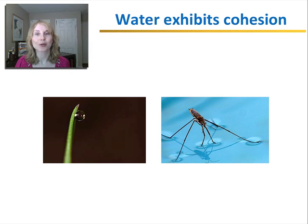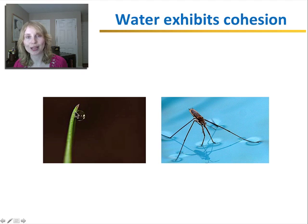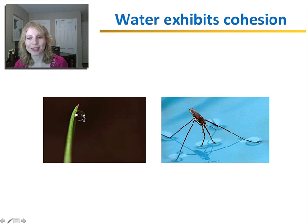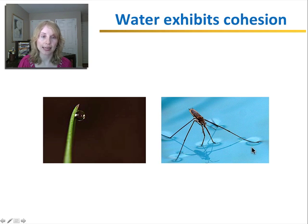Water also exhibits a property known as cohesion — the attraction that certain molecules have for each other. Water's hydrogen bonding attracts the water molecules together, so they exhibit cohesion and don't break apart easily. You can see an example of cohesion in this water droplet on a leaf. Because the water molecules are attracted to each other, they form this neat droplet. You can also see cohesion in this example of the water strider being able to walk on water — because water molecules have cohesion, it gives the surface of the water surface tension, meaning the surface doesn't break easily, hence the bug can walk on water.